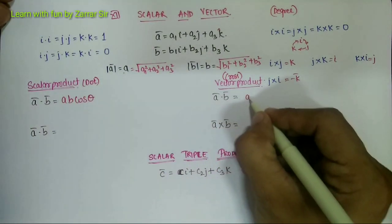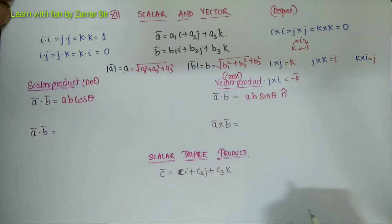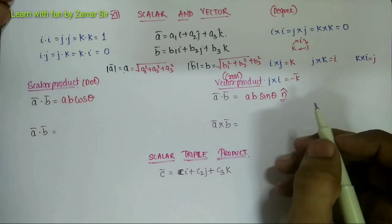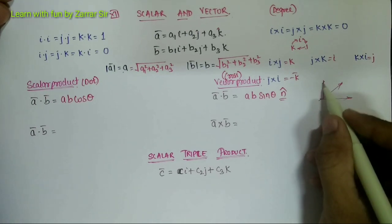Vector product: a b sine theta n cap. So n cap is very important - it is the perpendicular direction of a and b. Suppose a is in this direction, b is in this direction, so n cap is the perpendicular vector.